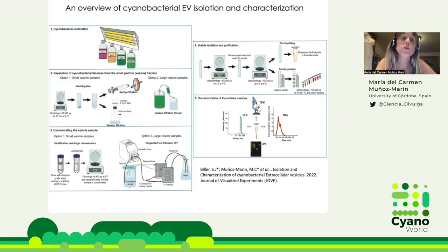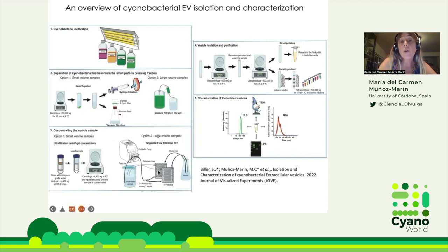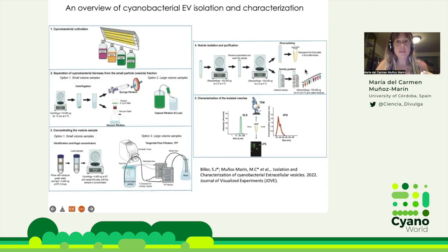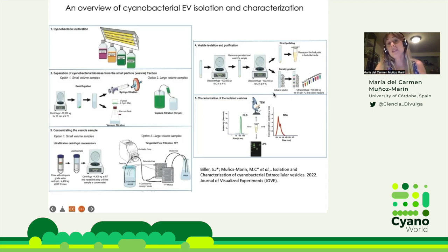For the experiments I'm going to show today, the minimum we use is four liters to 20 liters depending on the experiment. The next step is concentrating the vesicle sample — for small volumes you can use an Amicon column or tangential flow filtration; we use large volume samples. The fourth step is vesicle isolation and purification. Depending on the characterization you plan next, you purify more or less. In my case, I used direct pelleting — just ultracentrifuge and pelleting, then resuspending the vesicles in the pellet. For a better gradient, you can do density gradients with iodixanol solution. The fifth step is characterization by dynamic light scattering, nanotracking analysis, TEM, or lipopolysaccharide profile.